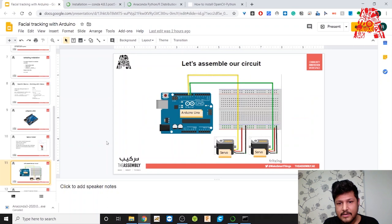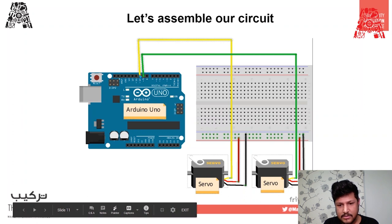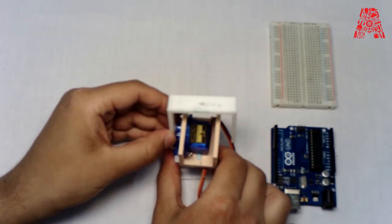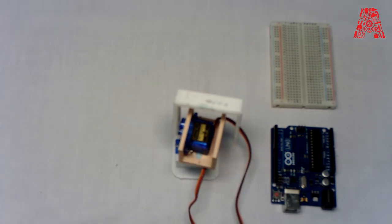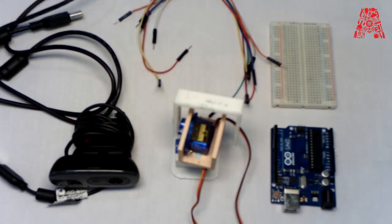Here is the assembly of the circuit. It's pretty straightforward: we have a base servo connecting power and ground for both servos. One servo goes to pin number 10 on the Arduino, which is the base servo, and the top servo goes to pin number nine. We have the Arduino Uno, a breadboard, a 3D-printed mount, and servos stacked on top of each other — one for moving along the X-axis and one for the Y-axis — with a webcam mounted on top.